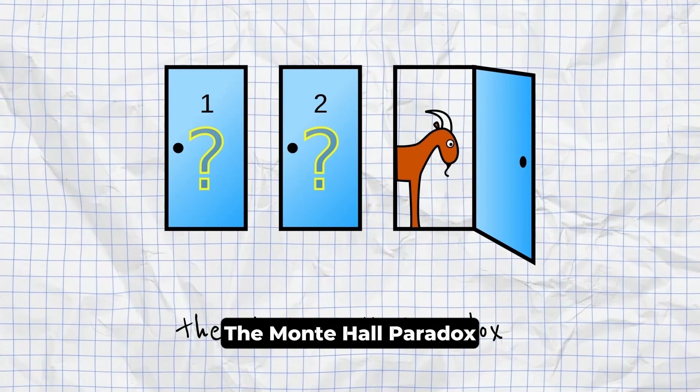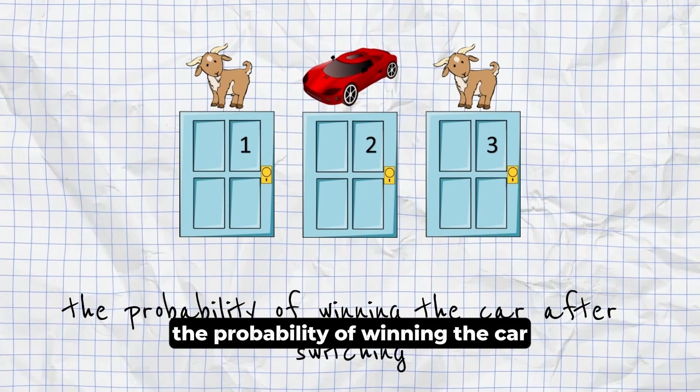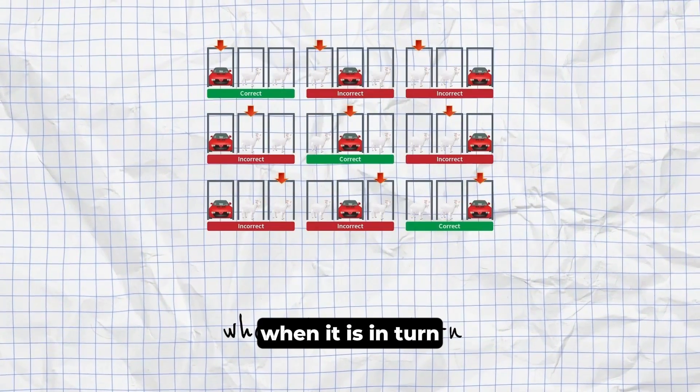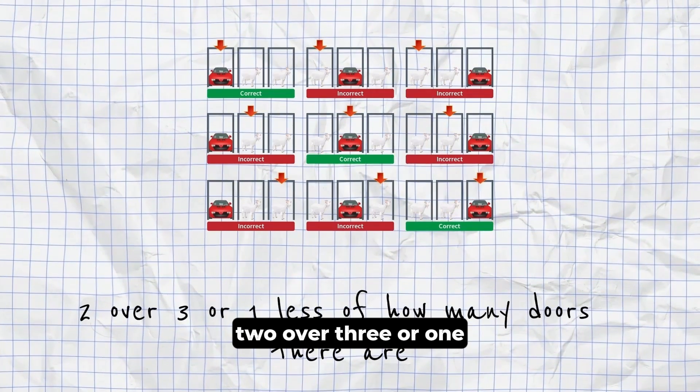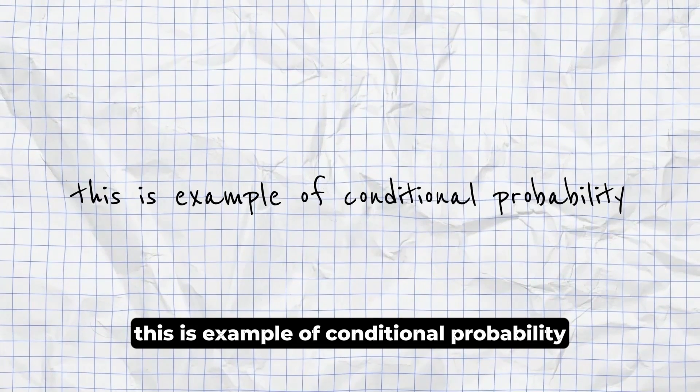The Monty Hall Paradox. A brain teaser loosely based on the show Let's Make a Deal. The probability of winning the car after switching seems to still be one half, when it is in turn two over three, or one less of how many doors there are. This is an example of conditional probability.